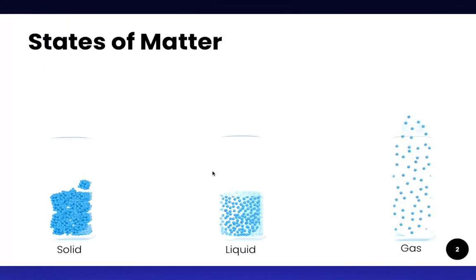So as I'm sure you're aware there are three states of matter: solid, liquid, and gas. Today we are going to explore more about solids, liquids, and gases and how substances can transfer from one state to another.